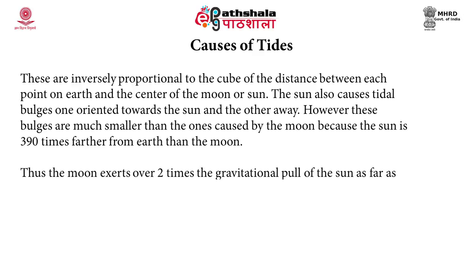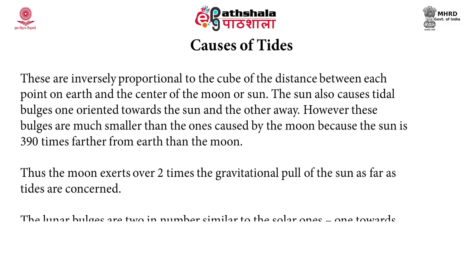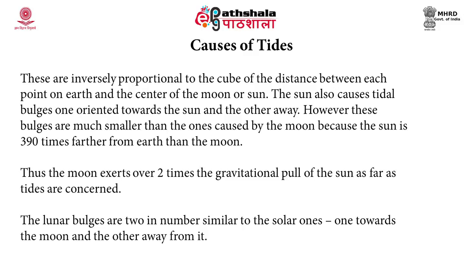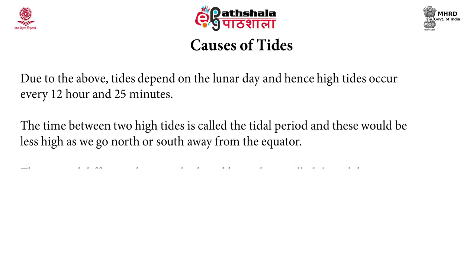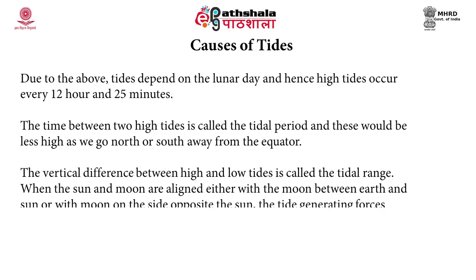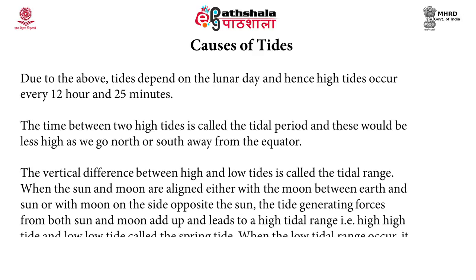The sun also causes tidal bulges, one oriented towards the sun and the other away from it. However, these bulges are much smaller than the ones caused by the moon because the sun is 390 times farther from earth than the moon. Thus, the moon exerts over two times the gravitational pull of the sun as far as tides are concerned. The lunar bulges are two in number, one towards the moon and the other away from it.